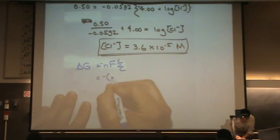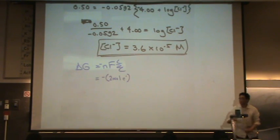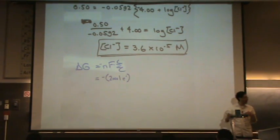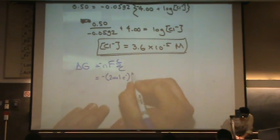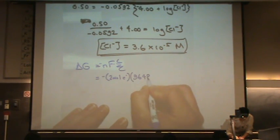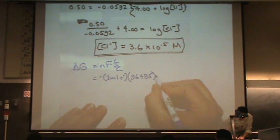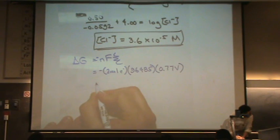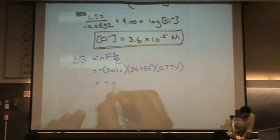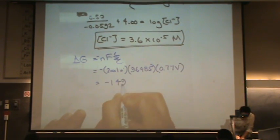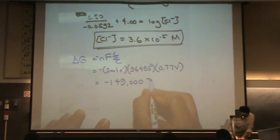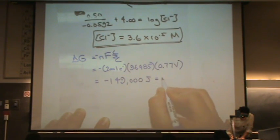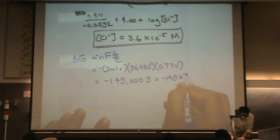So delta G, that's minus N is 2 moles of electrons. That was from before. That's the moles of electrons that cancel out in the half reactions of the redox. F, that's a constant, 96,485. That will be given to you. And then E, that was measured at 0.77 according to the problem. So this is going to turn out to be minus 149,000 joules, or if you want it in kilojoules, minus 149 kilojoules.